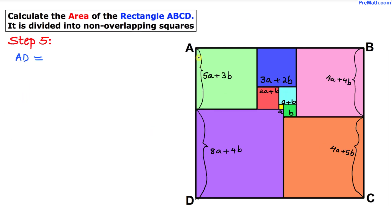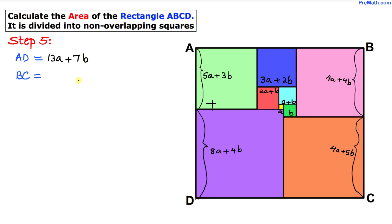Now in this next step we are going to find the length of side AD — that is going to be the lime green plus the purple. If we add them, 5a plus 8a is 13a, and 3b plus 4b is 7b, giving AD = 13a plus 7b. And we are going to calculate the length of the other side: BC is simply the pink length plus the brown length. Adding them up, 4a plus 4a is 8a, and 4b plus 5b is 9b, so BC = 8a plus 9b.